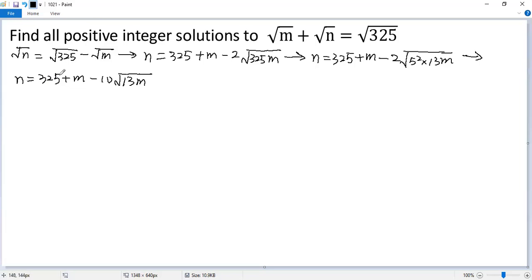We know n, 325, and m are all natural numbers. So the square root is also a natural number. So we get square root of 13 times m is a natural number. But that means 13 times m should be a perfect square.